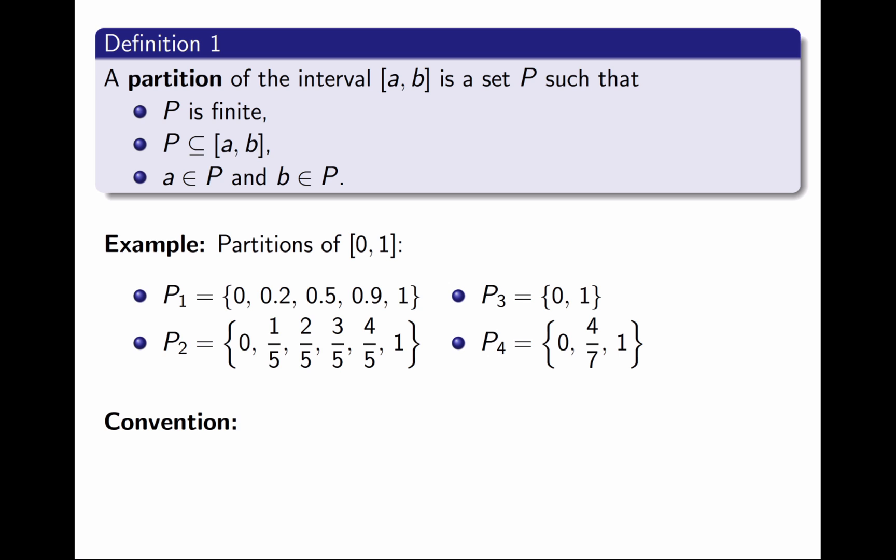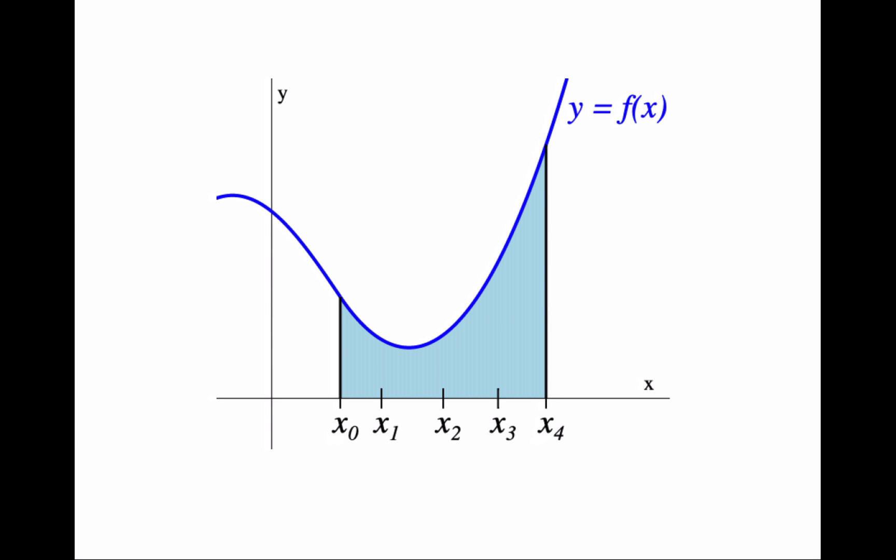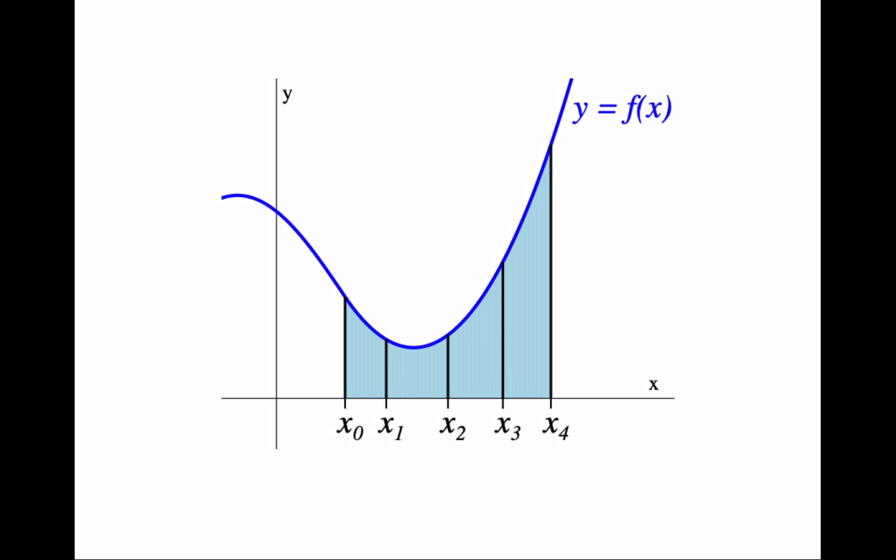I will use a convention to simplify notation. Every time I write a partition P as a set {x₀, x₁, x₂, ..., xₙ}, I am going to assume that the points are already in order. This is for simplicity. I do not want to have to write this every time. Great! Now we have the language we need to describe how to cut a region into slices. For example, if this is the region whose area I want to compute, and I take this partition of the interval, then I can cut the region into slices.